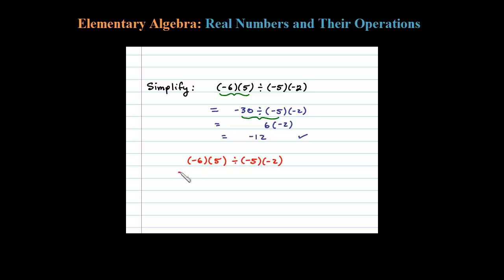Now here in red, it's common that folks would do the multiplication first. So here, negative 6 times 5 would be negative 30. And then, remember this is incorrect here, so negative 5 times negative 2 is positive 10.